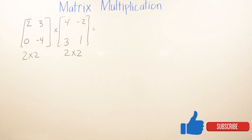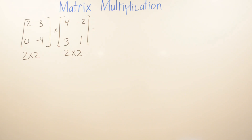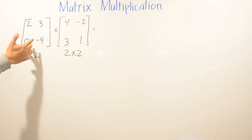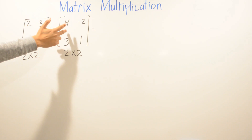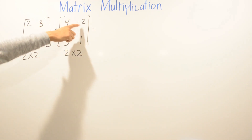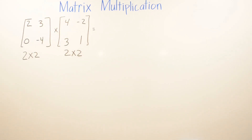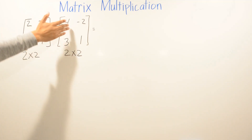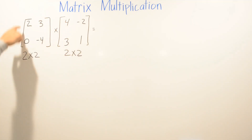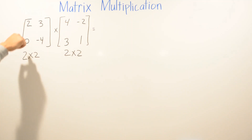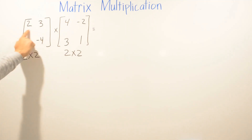In this video we're going to be doing matrix multiplication. We're going to go ahead with the matrix: 2, 3, 0, negative 4 — and the other matrix is 4, negative 2, 3, and 1. This is a 2 by 2 matrix, same as here — 2 by 2 matrix. We have two rows and two columns.